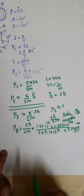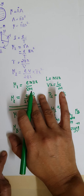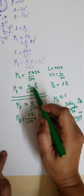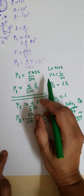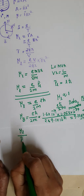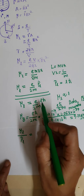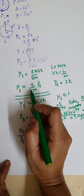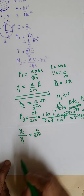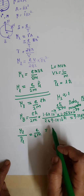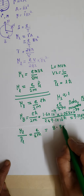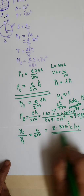This is the Bohr magneton mu B. We can also find the ratio of the magnetic dipole moment to the orbital angular momentum, represented as mu L divided by P_L. From the equation, this ratio equals E divided by 2M. Calculating: 1.6 times 10 to the minus 19 divided by 9.1 times 10 to the minus 31 gives 8.8 times 10 to the 9 coulombs per kilogram.